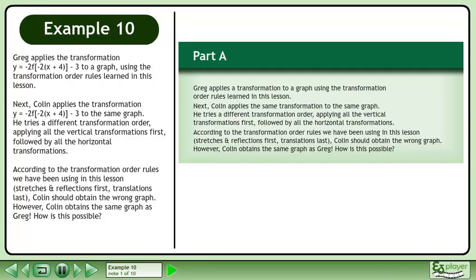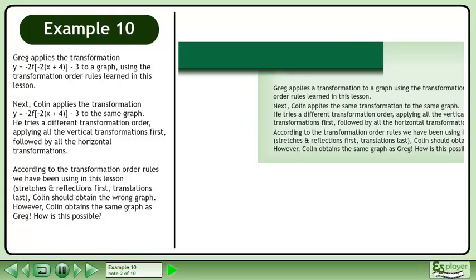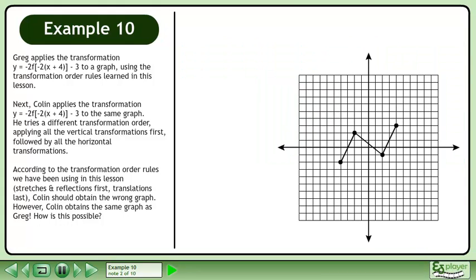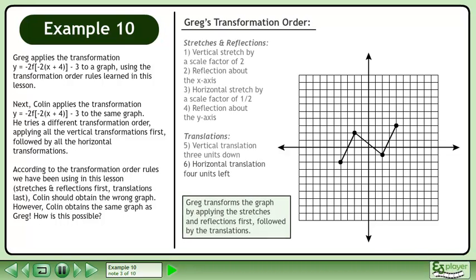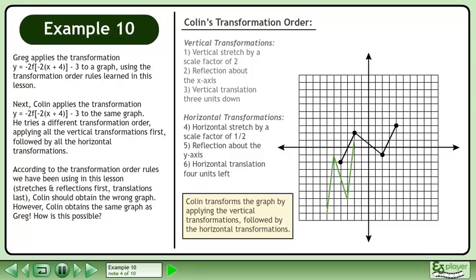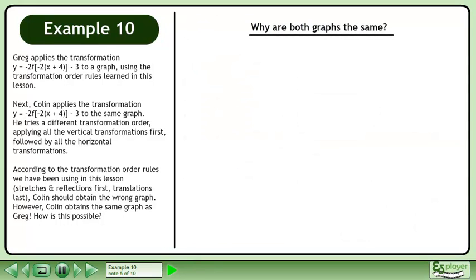However, Colin obtains the same graph as Greg. How is this possible? Let's bring up the graph. Greg transforms the graph by applying the stretches and reflections first, followed by the translations. Colin transforms the graph by applying the vertical transformations, followed by the horizontal transformations. Why are both graphs the same?